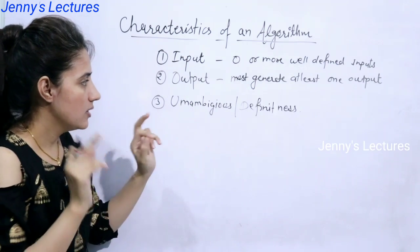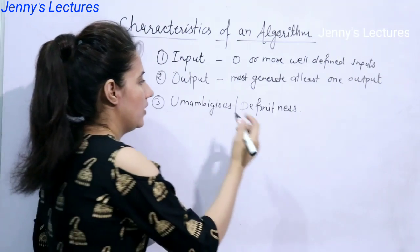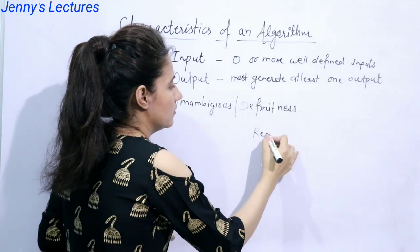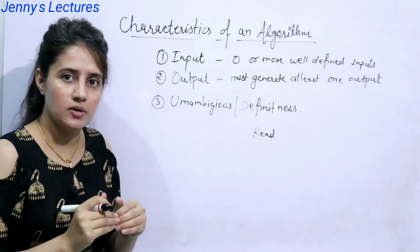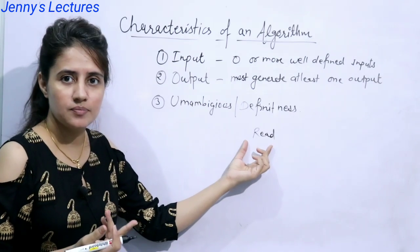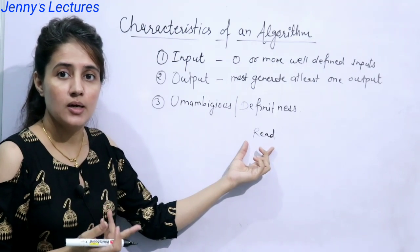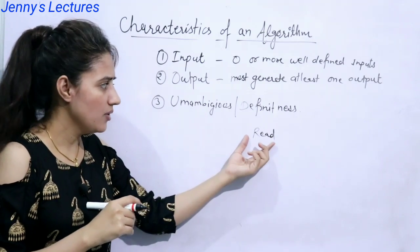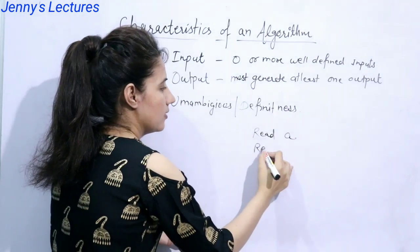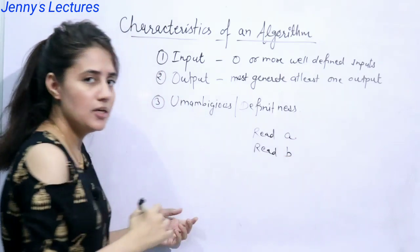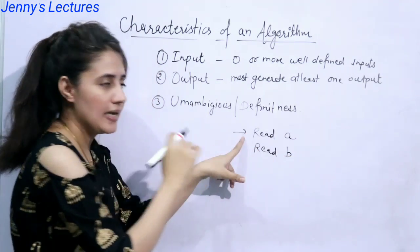Now what does that mean? See, suppose if you are writing read, if you are writing an algorithm for sum of two numbers and you are writing statement read, means what, what are you reading? This is an unambiguous statement, it is having multiple meanings. And if you will write read a, read b, it means this statement is having a clear meaning.